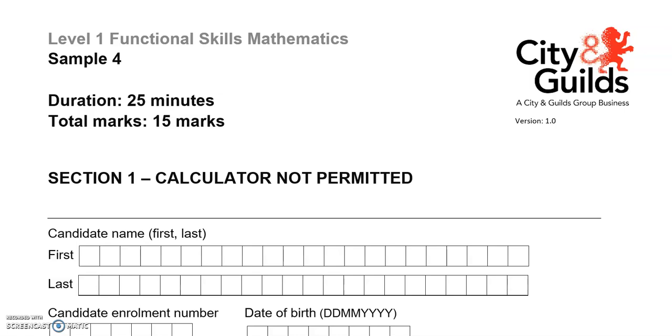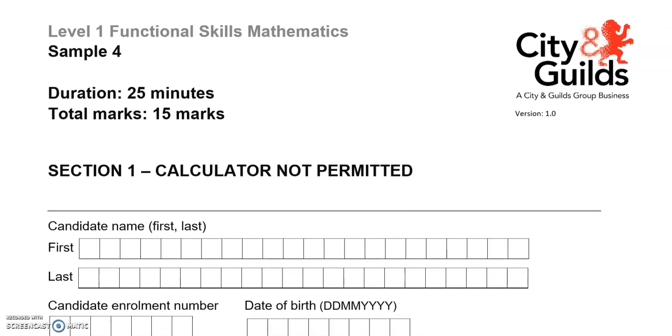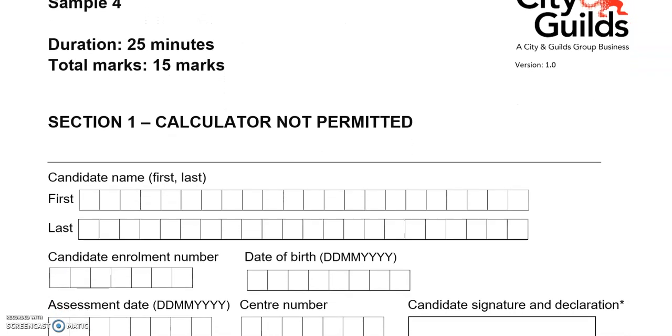This is the first part of a Functional Skills Level 1 paper from City and Guilds. There is a total of 15 marks for this paper and you can't use a calculator.